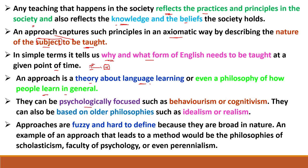Learners can be psychologically focused, such as through behaviorism and cognitivism. These methods can be followed in an approach, and they can also be based on older philosophies such as idealism and realism. Approaches are fuzzy and hard to define because they are broad in nature. An example of an approach that leads to a method would be the philosophy of scholasticism and even perennialism — perennialism means eternal, something that remains permanently for a long time.